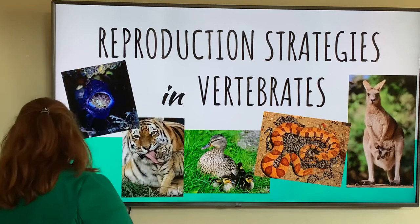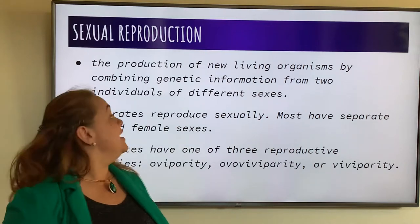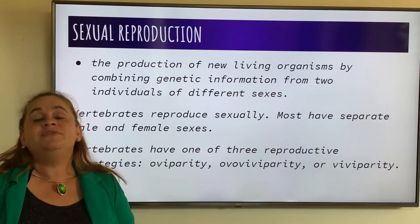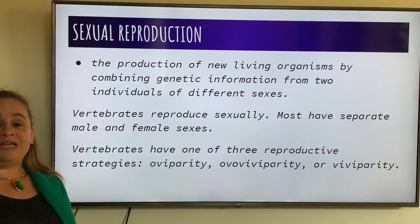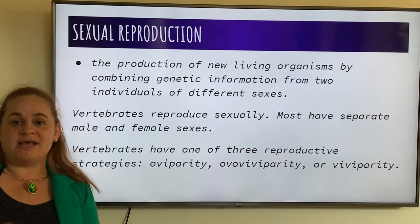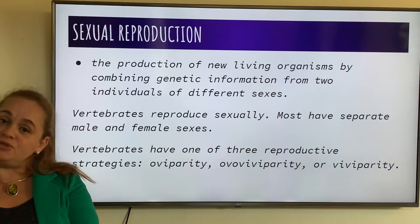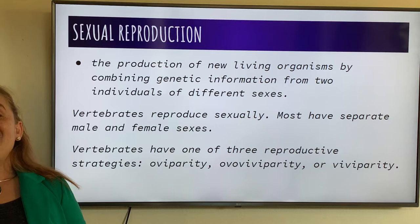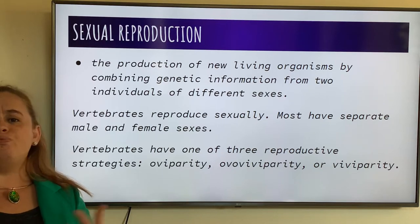So let's start off with the definition of sexual reproduction. This is the production of new living organisms, or creating new living creatures with the combination of two DNAs from two different individuals, usually a male and a female. In vertebrates, majority of them actually combine their DNA — there's a male and there's a female, and there's a whole process.